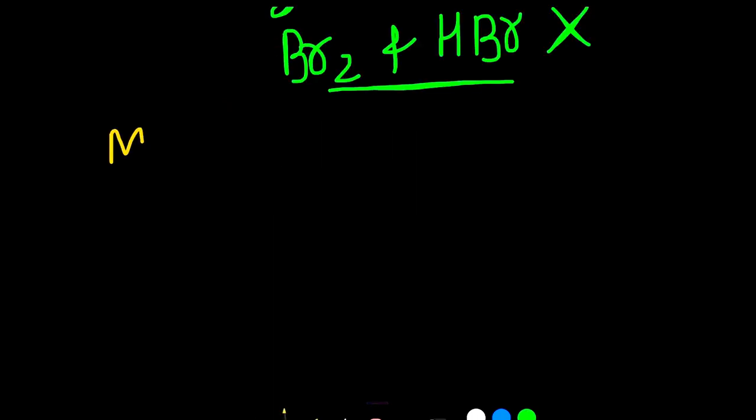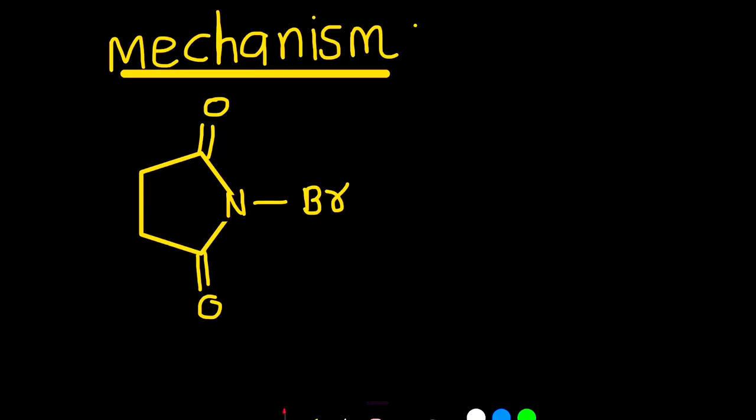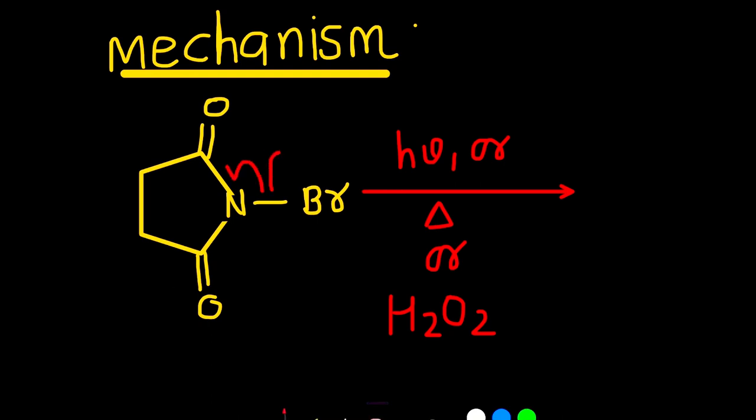We discuss about the mechanism of this reaction. The first step, in the presence of light or high temperature or radical initiator like peroxide, the homolytic bond cleavage takes place. The electrons will distribute equally in both of them. That means both atoms have one electron each.